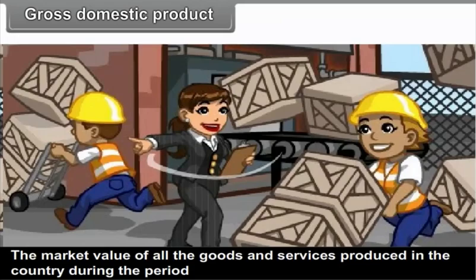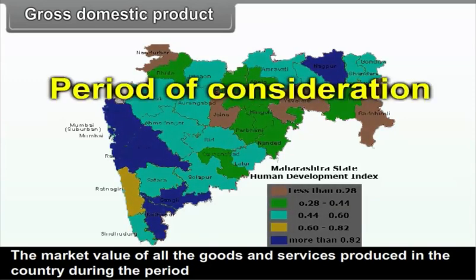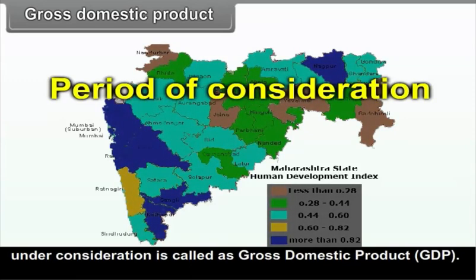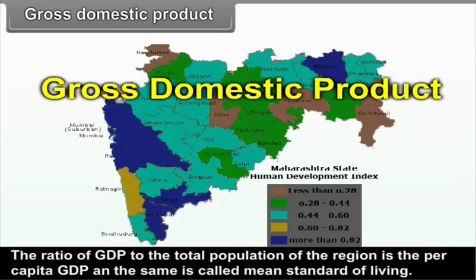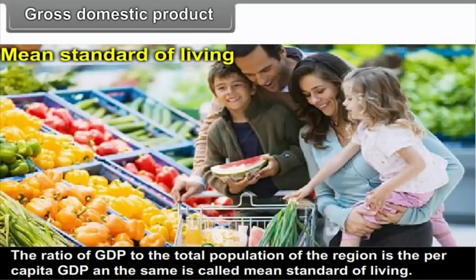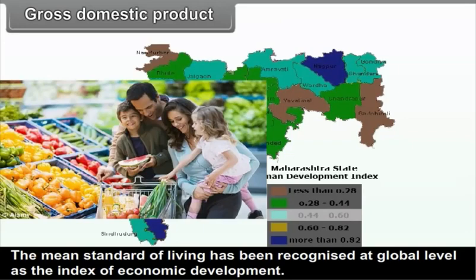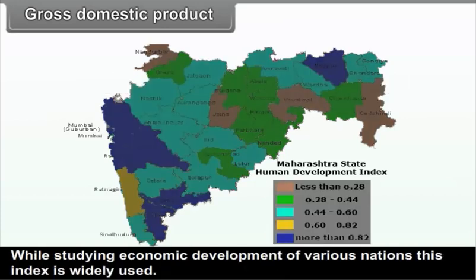The market value of all the goods and services produced in the country during the period under consideration is called Gross Domestic Product (GDP). The ratio of GDP to the total population of the region is the per capita GDP, also called Mean Standard of Living. The Mean Standard of Living has been recognized at the global level as the Index of Economic Development and is widely used while studying the economic development of various nations.